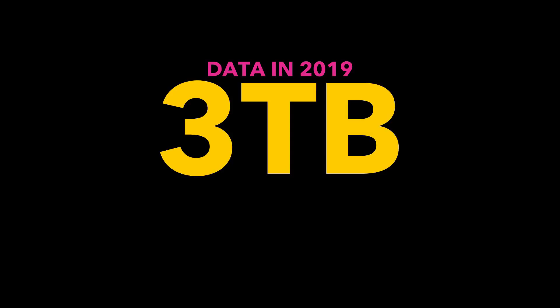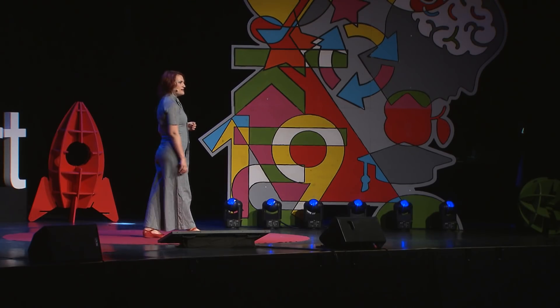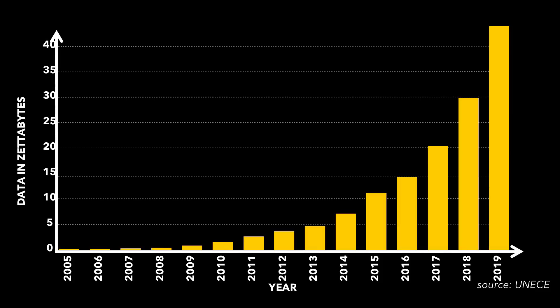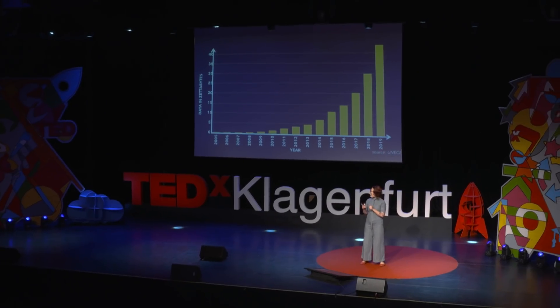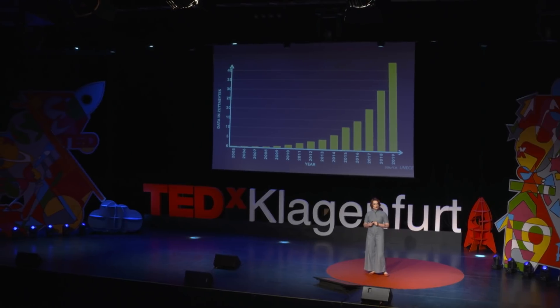Today, most of us in this audience are dealing with something like three terabytes of data per person — a long way past that five kilobytes. And in terms of the world, we're looking at 44 zettabytes of data being calculated this year alone. It's about two stacks of books from here to Pluto. That's how much data we're going to have by the end of this year alone. Now, we just can't keep up.